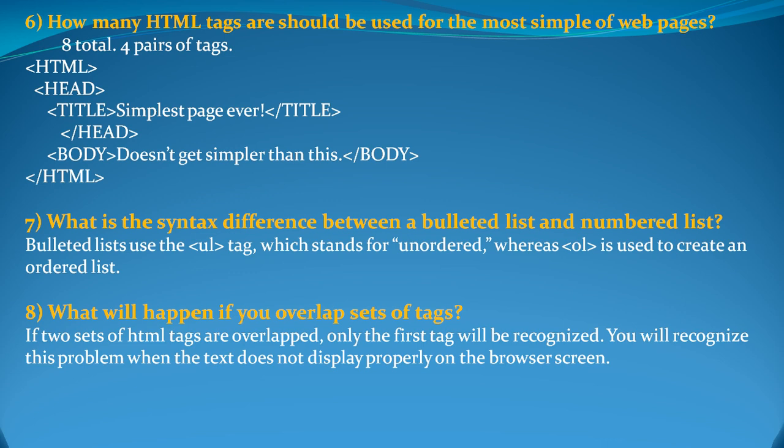What will happen if you overlap a set of tags? Nothing would happen — the first tag would get recognized. For example, if you are using a button tag and you have another tag inside it, the first one would be recognized by the system. Whenever you are using two sets of tags, the first tag would be recognized. You would generally notice this problem when the text does not display properly on the browser screen.